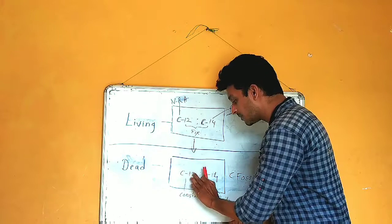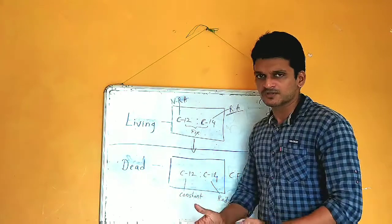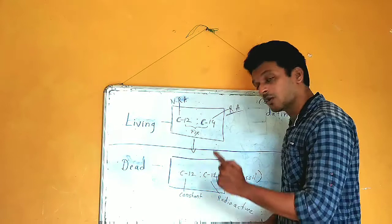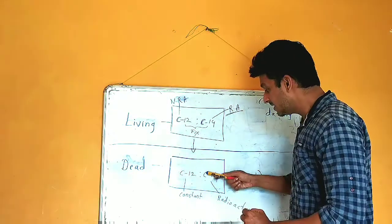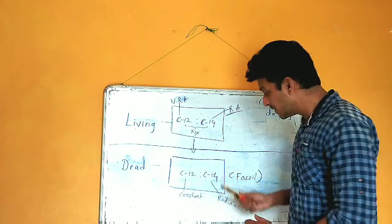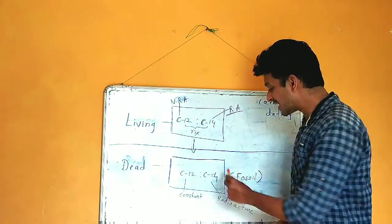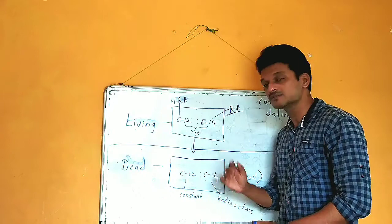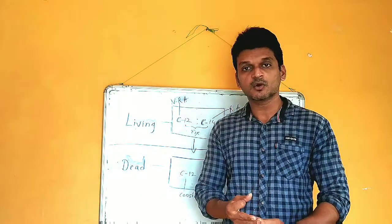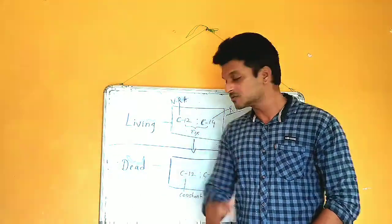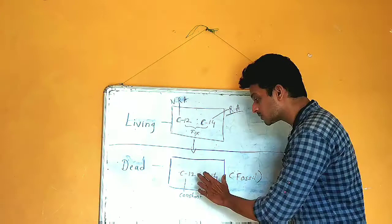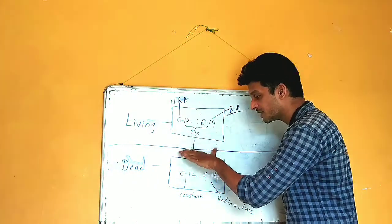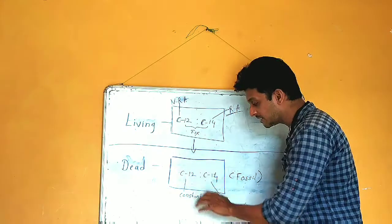The amount of carbon-12 will remain constant since it is non-radioactive. But now only one process will continue — the decay of carbon-14. Replenishment of carbon-14 stops because the fossil is no longer breathing, eating, or drinking water. And that is why the fixed ratio of carbon-14 to carbon-12 will start decreasing.